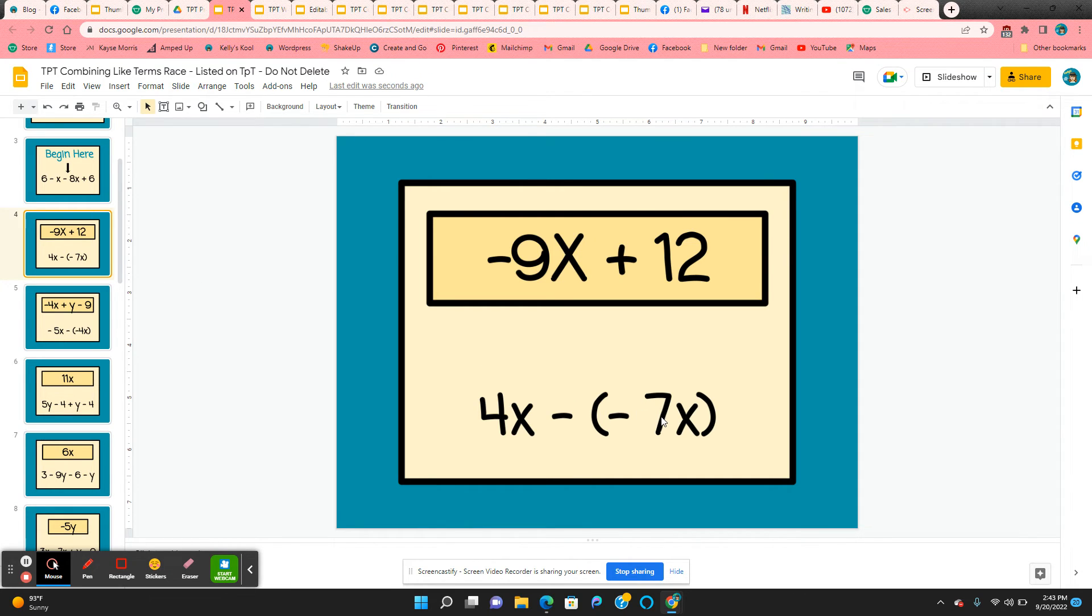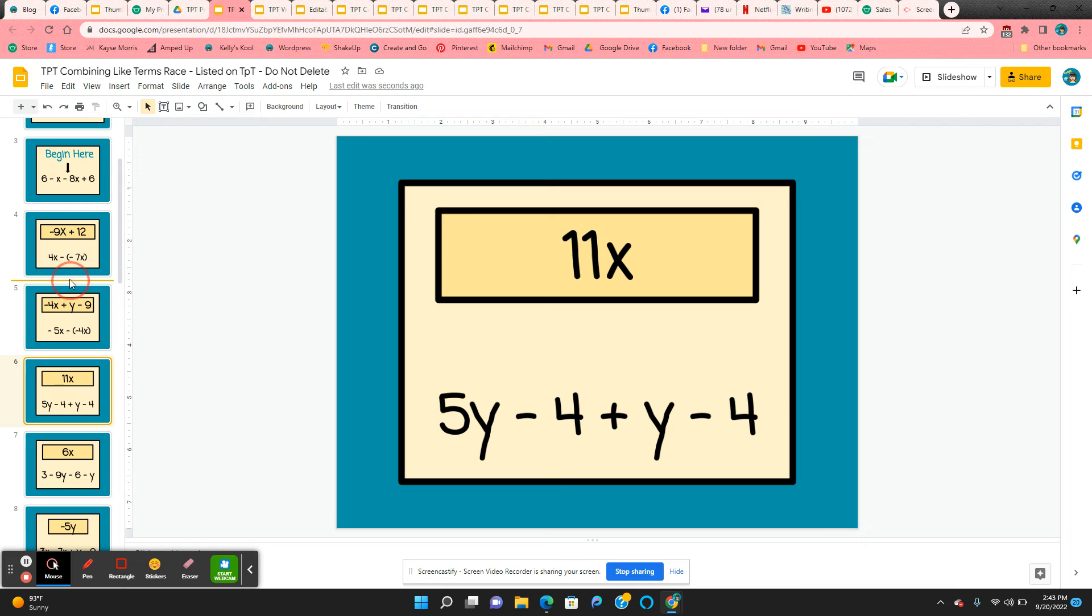4x negative negative 7x. That would give them 11x. So it's right here. Click and hold, move it into place.